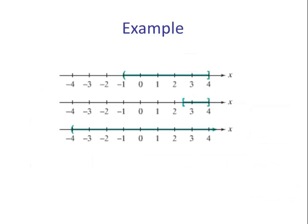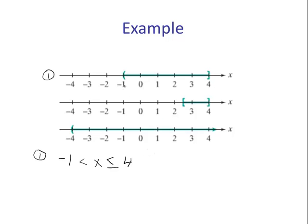Let's do an example. For these three, we want to write each group of numbers using inequalities and interval notation. For the first one, numbers in between negative one and four: using inequalities, we start with negative one, our largest value is four, and X is in between. It can equal four so we put an equal sign there, but it does not equal negative one so we do not. In interval notation, we write (−1, 4] — parenthesis for negative one because it can't equal it, and a bracket for four because it can.